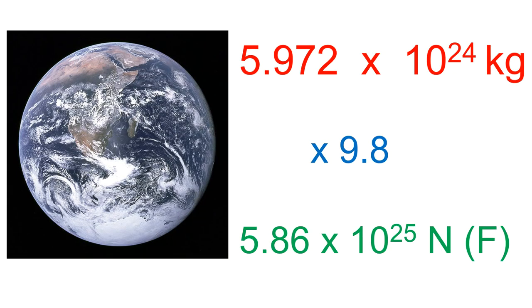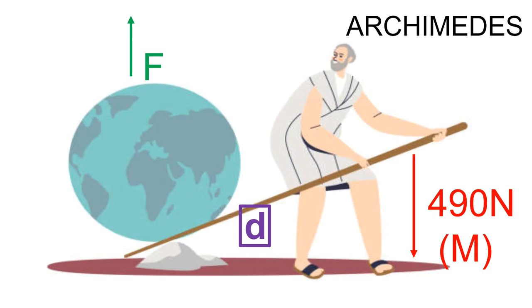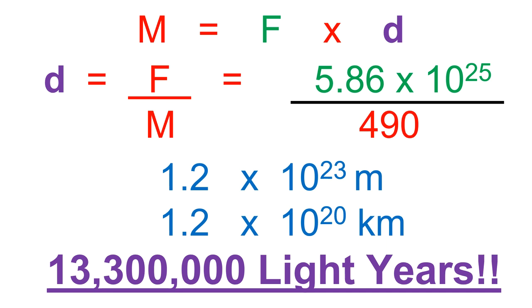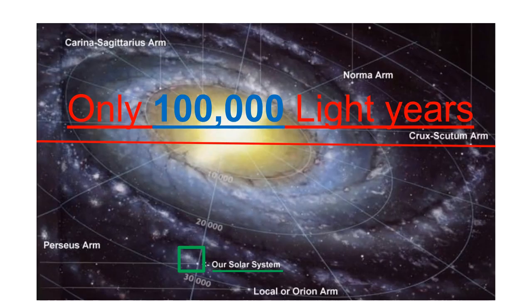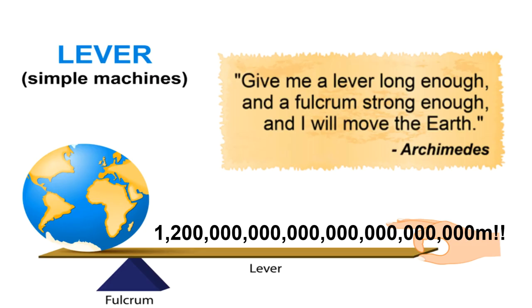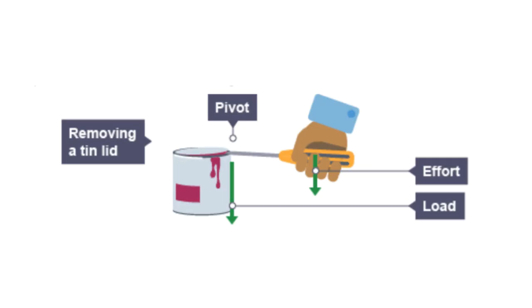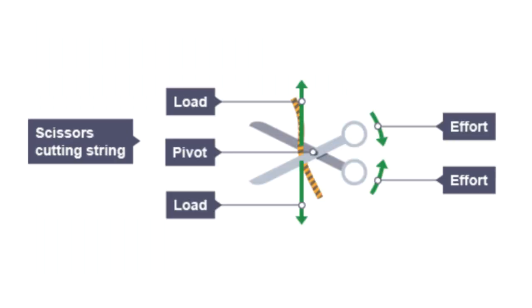Archimedes said: 'Give me a lever long enough and I could lift the whole Earth.' Calculating: the weight of Earth is mass × 9.8 = 5.86 × 10²⁵ N. With Archimedes pushing down with a moment of 490 N·m, rearranging gives a lever distance of 13,300,000 light years — 133 times the width of our galaxy. Technically correct, but impractical!